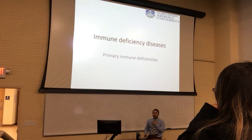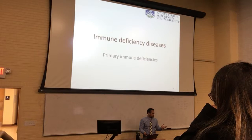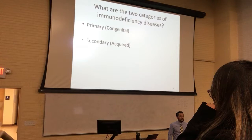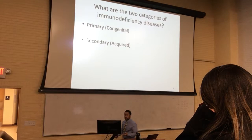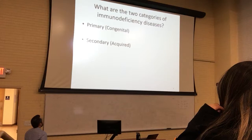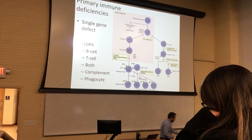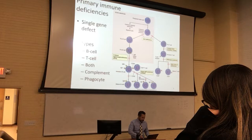With an immune deficiency disease, there is truly something fundamentally wrong with the system. They can either be primary — congenital, meaning you're born with it — or they're secondary and they're acquired. Either of them are sobering ideas, but we're going to go through both of them.